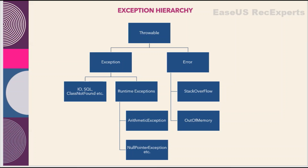The compiler will not compile the code successfully until checked exceptions are handled properly in the code by the developer. So if any code is reading a file or something, the compiler will force the developer to either enclose it within a try-catch block or add a throws statement in the method signature so that these exceptions can be handled. That's why these are known as checked exceptions — because these are checked at compile time.